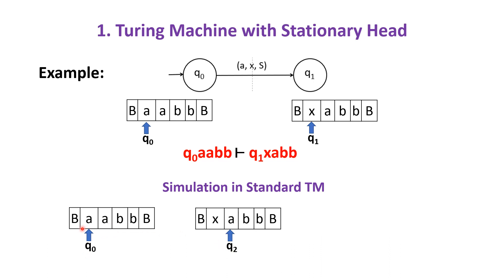And in the second move, change the intermediate state to the required state, that is q1. Keep the tape symbols as it is, just move towards the left. With these two moves, we can simulate the Turing machine with stationary head using standard Turing machine.